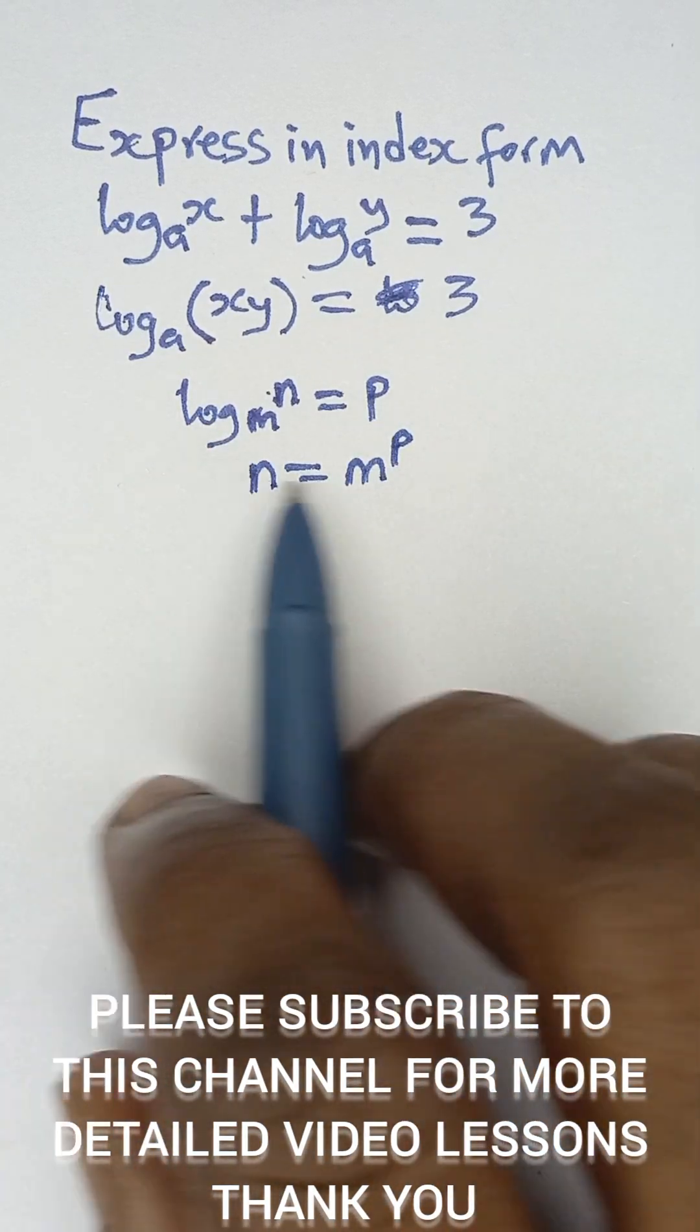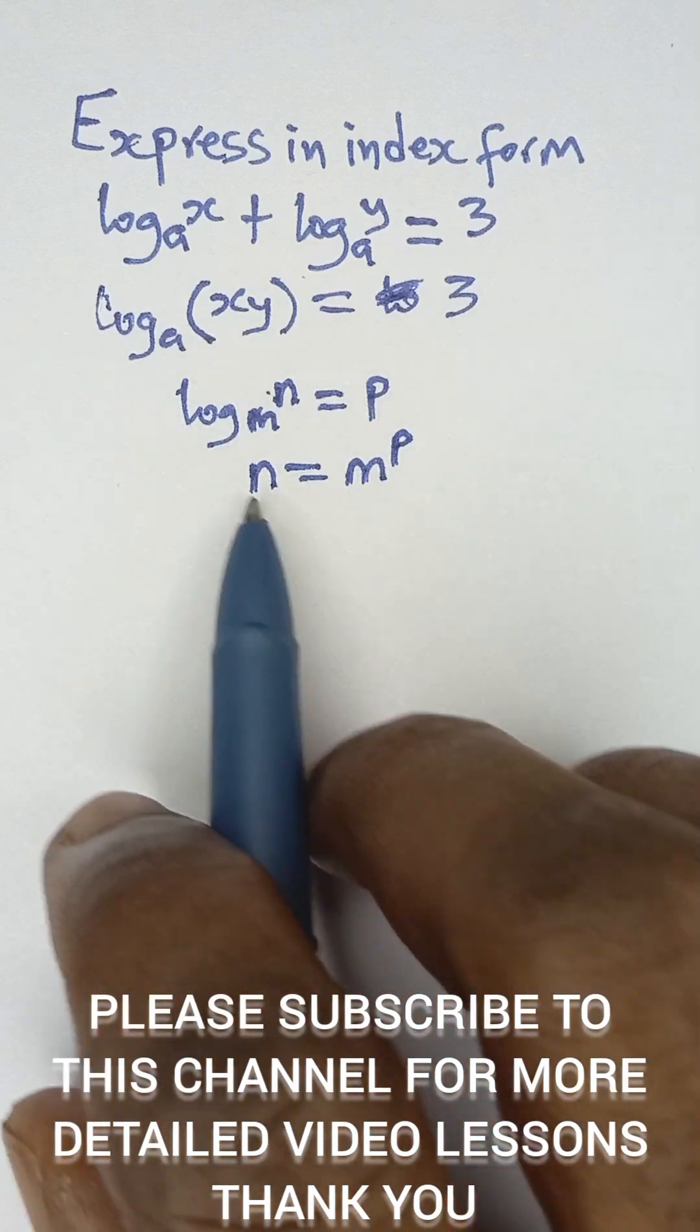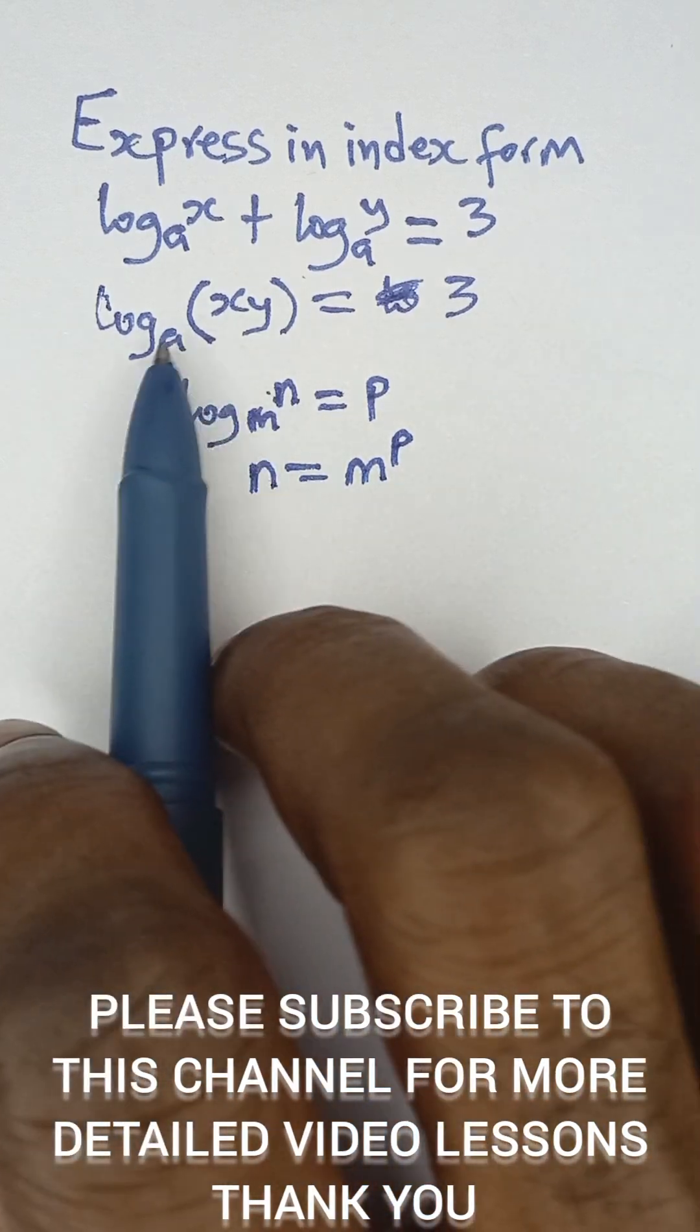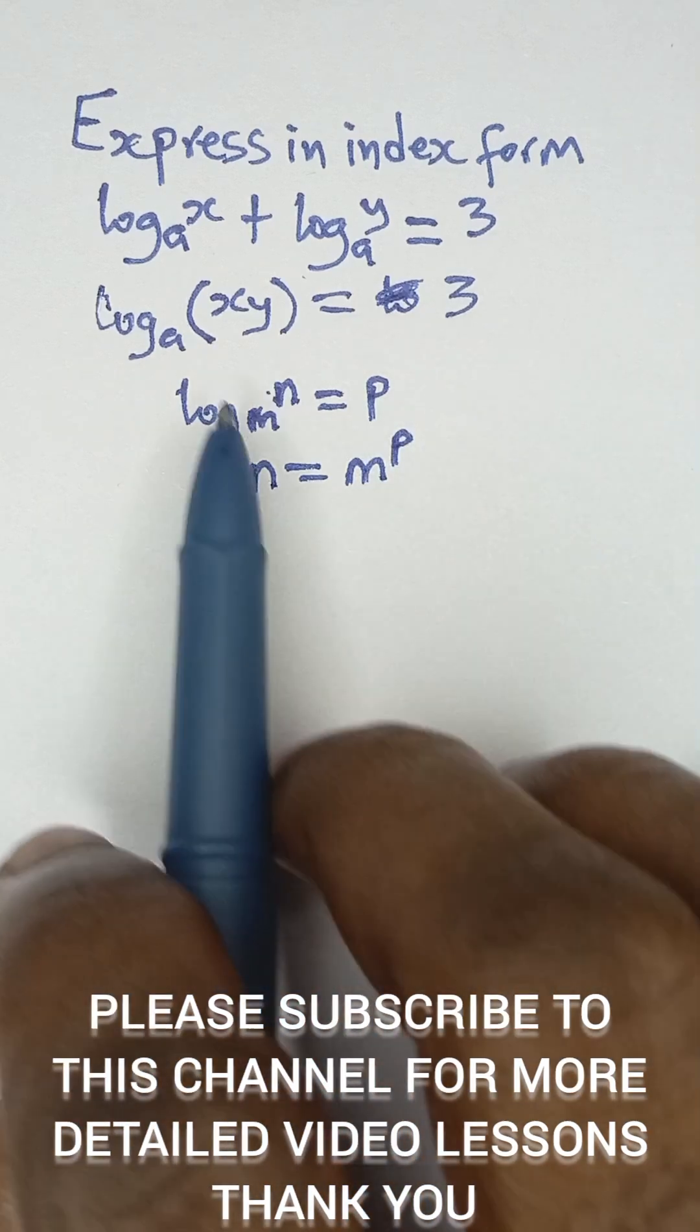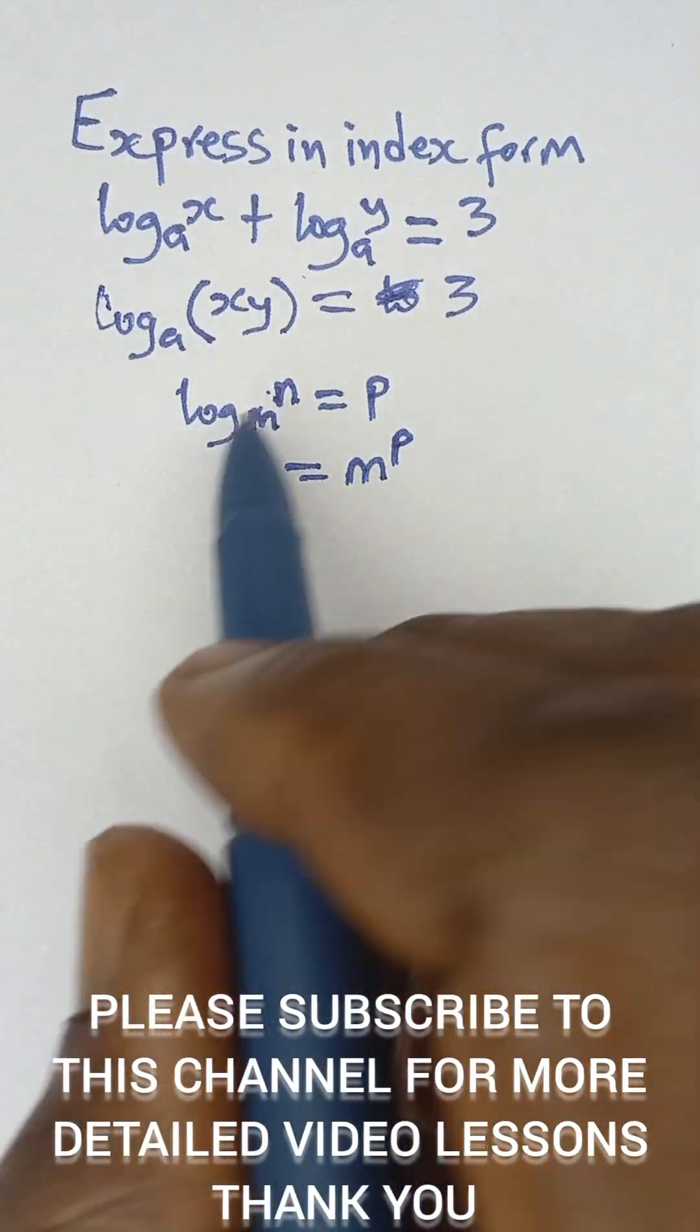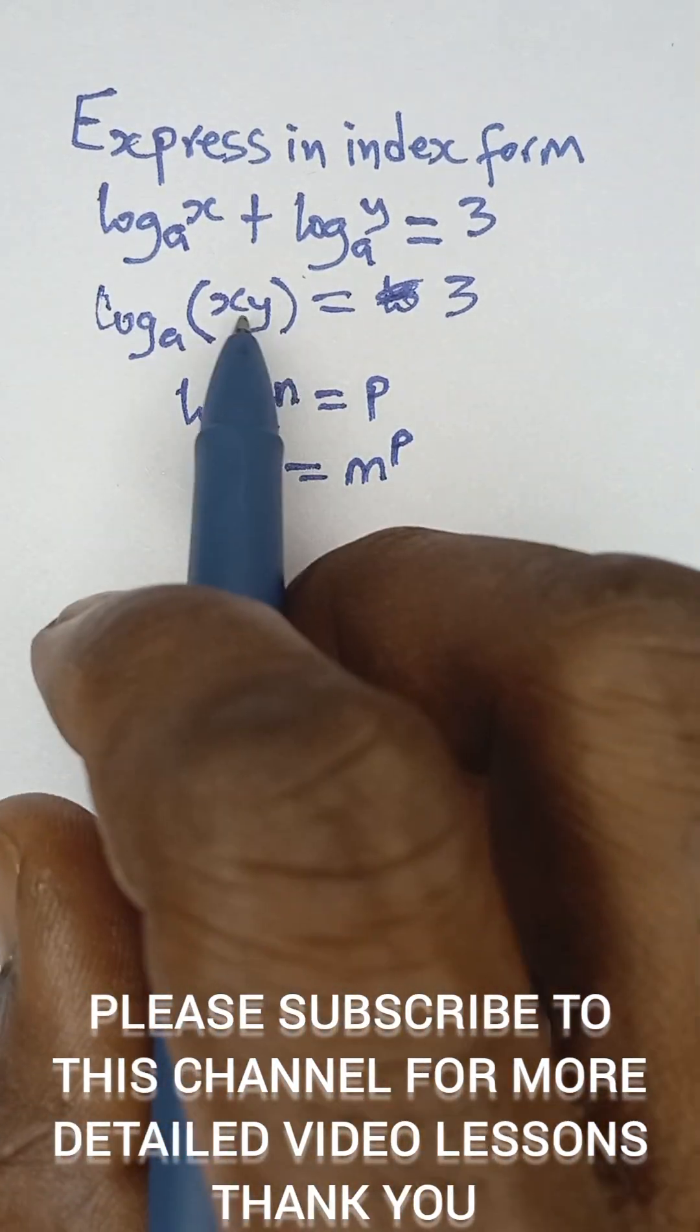Don't forget this rule in logarithm, that is how to convert logarithm to indices or logarithm to index form. So with that, with this rule, now we are going to express this in index form. So it's going to be the x y, like the m here is like the x y.